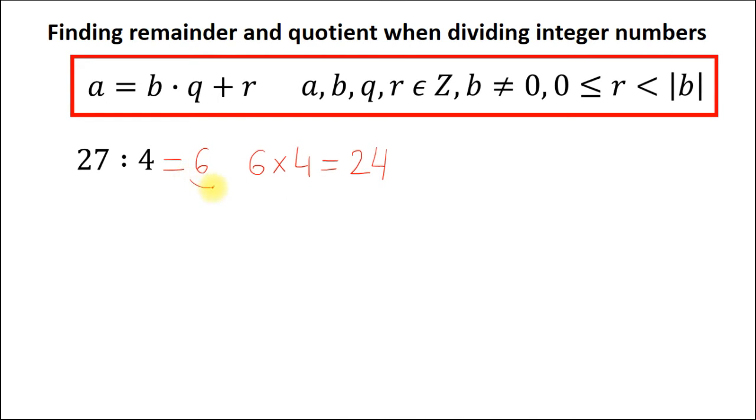So the quotient is 6. And now we should find the remainder. What number we should add to 24 to get our dividend of 27? It's 3, right? So the remainder is 3. And that means that 4 goes 6 times into 27 with the remainder of 3.